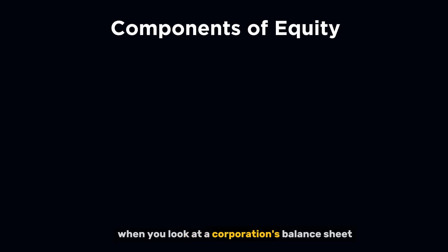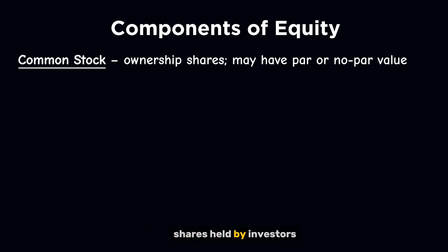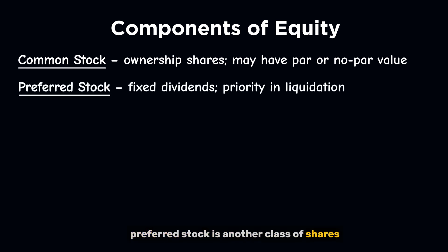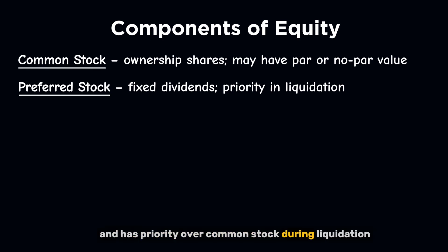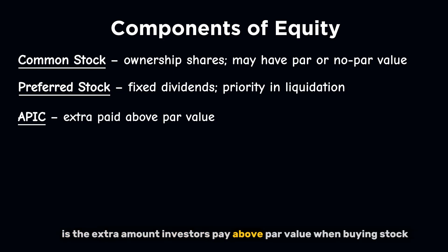When you look at a corporation's balance sheet, the equity section is made up of several key components. Common stock represents ownership shares held by investors. It can have a par value, like $1 per share, or no par, depending on the company's charter. Preferred stock is another class of shares — it often comes with fixed dividends and has priority over common stock during liquidation. Additional paid-in capital, or APIC, is the extra amount investors pay above par value when buying stock. It's still equity, but separate from the base value of shares.